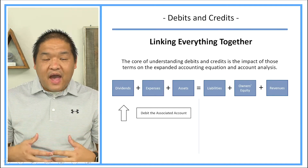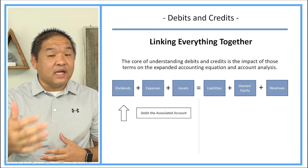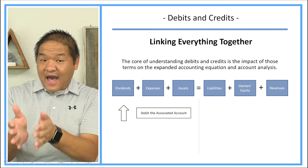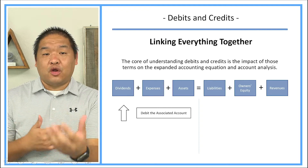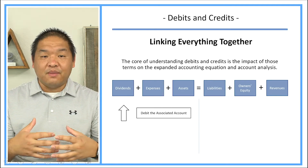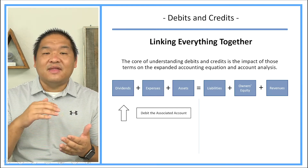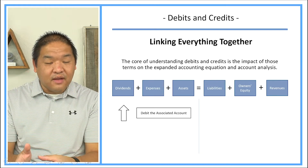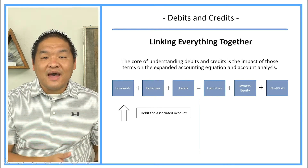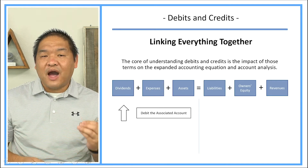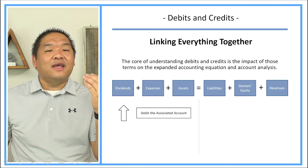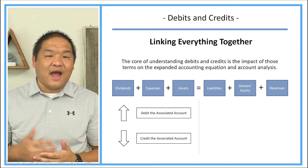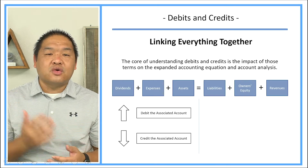So if you have more expenses, that means expense goes up. If expense goes up, we're going to debit the expense account. Asset — equipment: if we buy more equipment, the equipment account goes up because I have more equipment. Because the equipment account goes up and equipment is part of the asset component, since it increases, we're going to debit the equipment account. What about credit? Credits for dividends, expenses, and assets occur when they decrease. So when a dividend, expense, or asset decreases, we are going to credit the associated account.